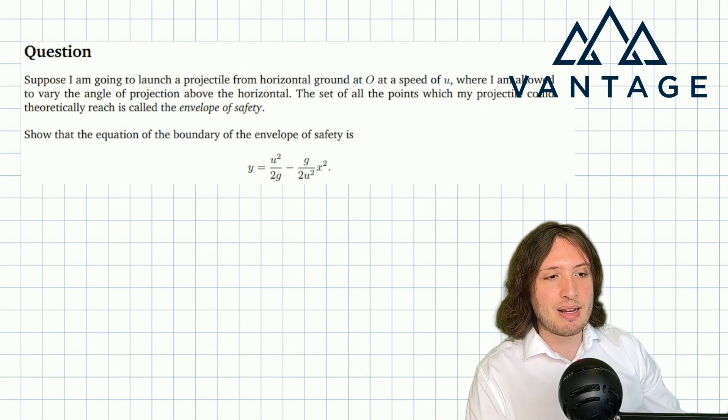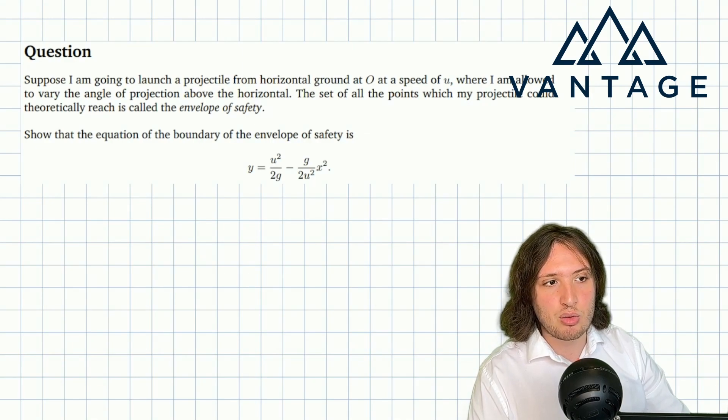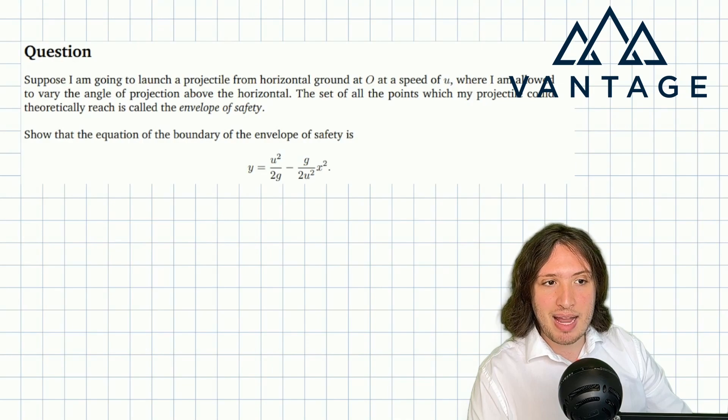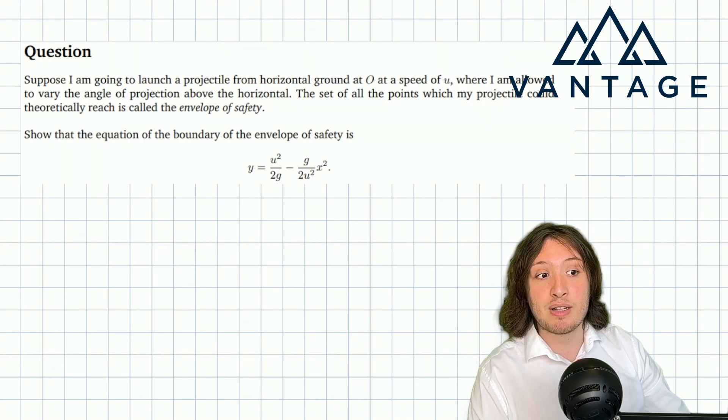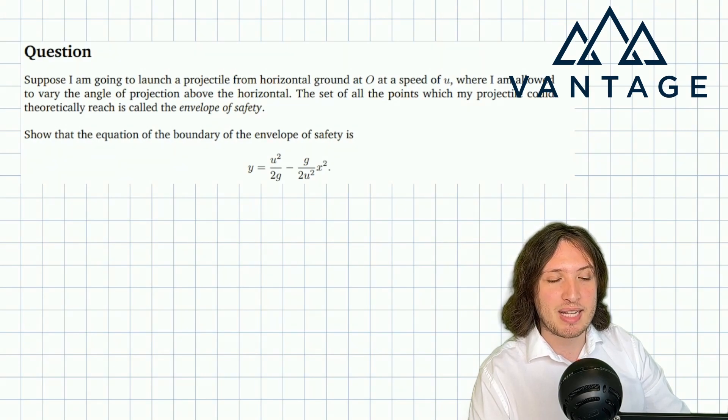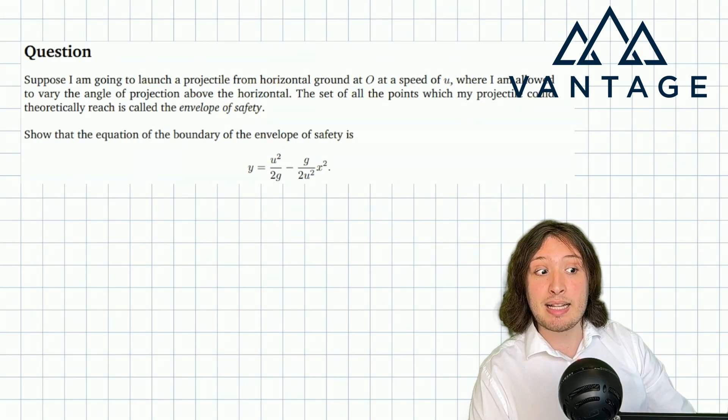In this problem we're considering a projectile launched from horizontal ground at O at a speed of u, where we're allowed to vary the angle of projection above the horizontal. The set of all the points which the projectile could theoretically reach we're going to call the envelope of safety.